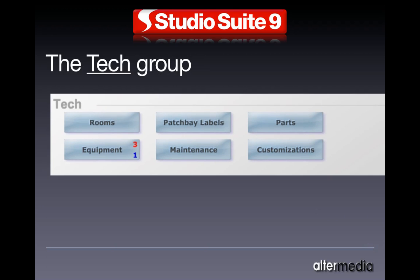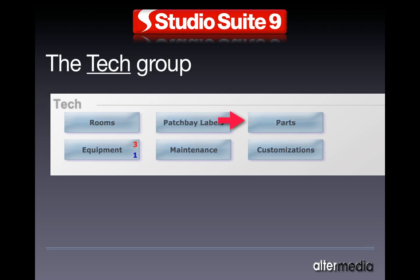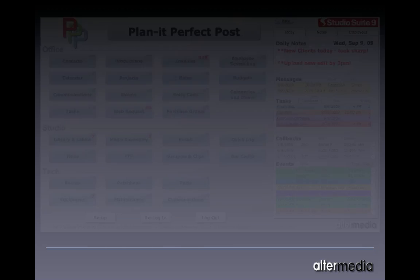The next module is the tech group, which includes rooms — where you define all of the different spaces that you can work in — all of the equipment and which room they're in, patch bay labels if you still have a patch bay, equipment maintenance, spare parts, and customizations, which is a place where you can keep track of any custom work that you've done to Studio Suite.